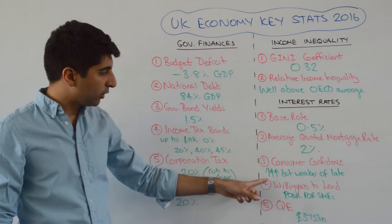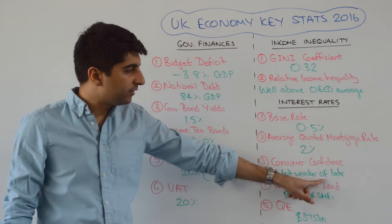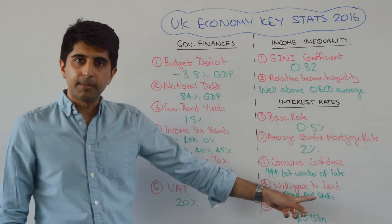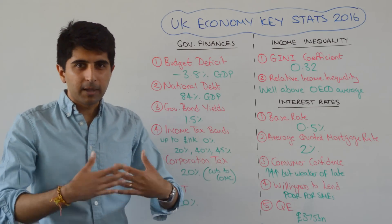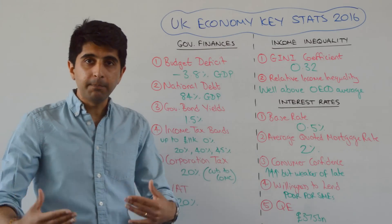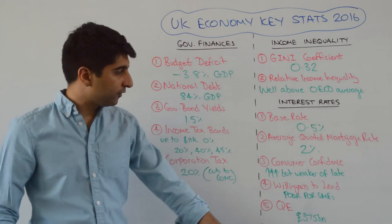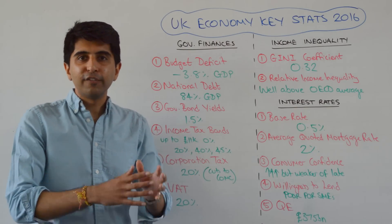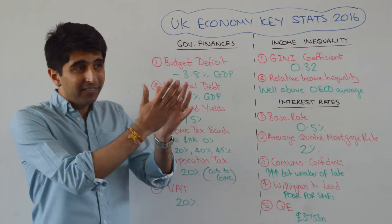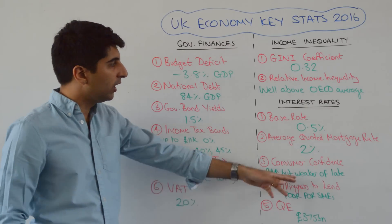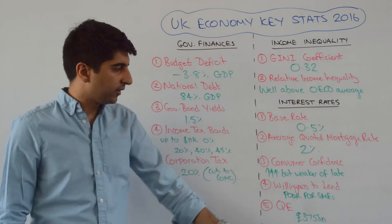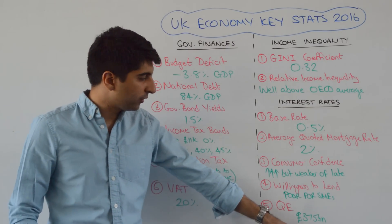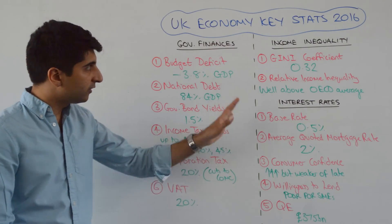Consumer confidence has been increasing significantly over the last two years, but more recently has weakened because of fears of potential Brexit. The willingness to lend to individuals via mortgages and general loans has improved over time. But for businesses — small and medium enterprises — it's extremely poor, and they are still finding it very hard to get loans. Lending stats for small and medium businesses show a very downward trend. You can therefore question the effectiveness of very loose monetary policy. The amount of quantitative easing — money pumped into the economy — stands at £375 billion, and that's not going to increase anytime soon.